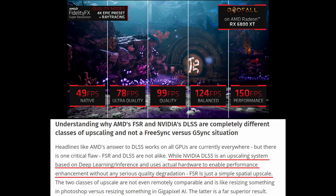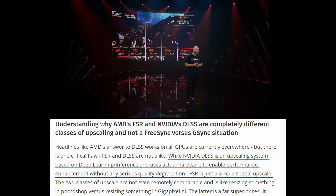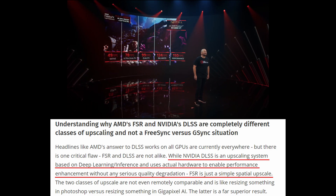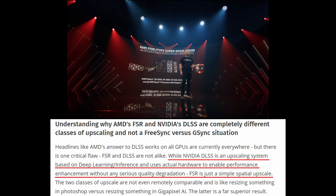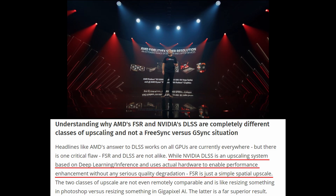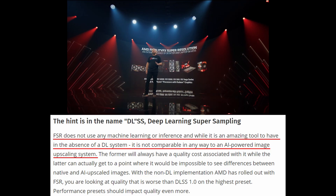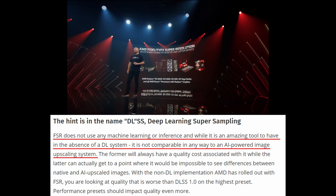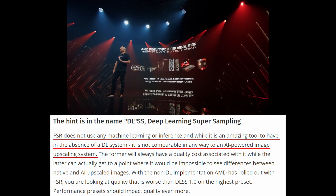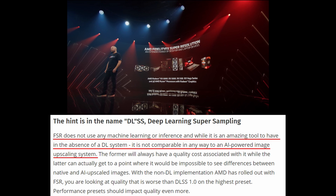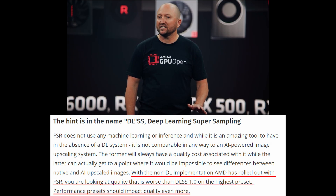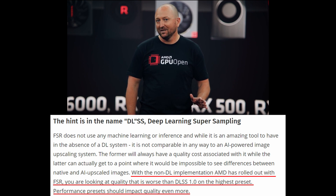The WCCFtech article states that while NVIDIA DLSS is an upscaling system based on deep learning inference and uses actual hardware to enable performance enhancement without any serious quality degradation, FSR is just a simple spatial upscale. The article goes on to say that FSR does not use any machine learning or inference, and while it is an amazing tool to have in the absence of a DLSS system, it is not comparable in any way to an AI-powered image upscaling system. With the non-DL implementation AMD has rolled out with FSR, you are looking at quality that is worse than DLSS 1.0 on the highest preset. Performance presets should impact quality even more.